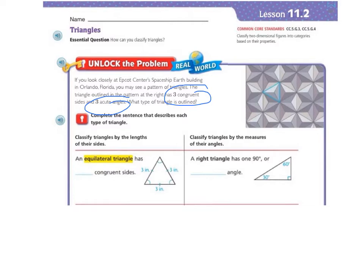It says, complete the sentence that describes each type of triangle. So, we're going to be classifying the triangle in two ways. We're going to be classifying it by the length of its sides and also by the measures of its angles.